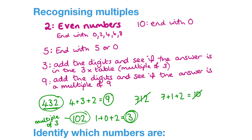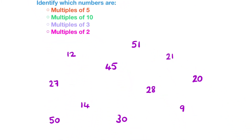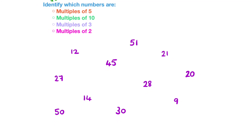To spot a multiple of three, add the digits and see if the answer is in the three times table. And the very same trick works with the nine times table. For 432, the digits summed to nine, which is a multiple of nine, so 432 is also in the nine times table. For 712, the digits summed to ten, which is not in the nine times table, so 712 is not a multiple of nine.